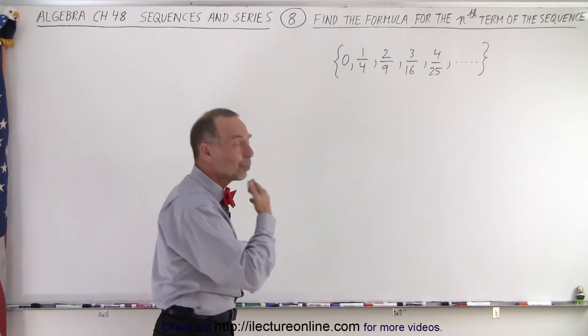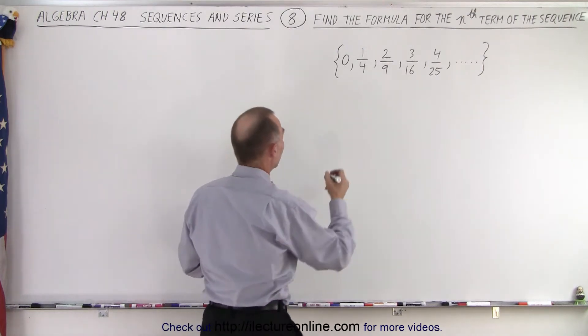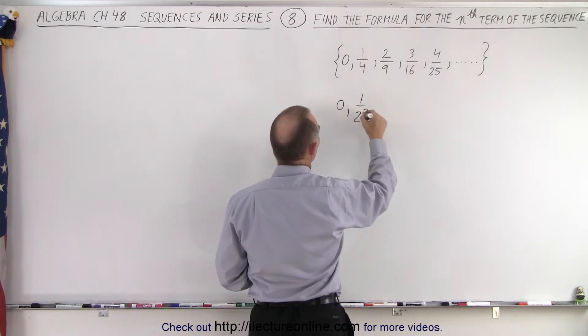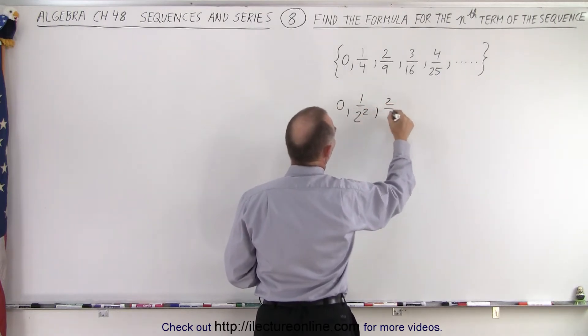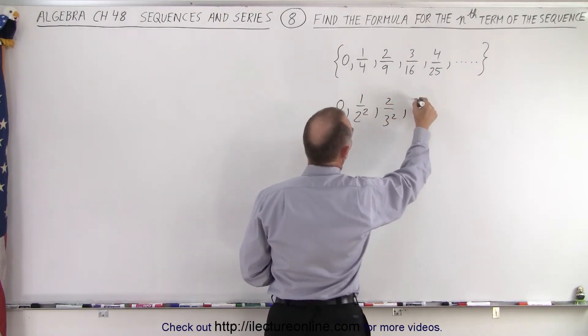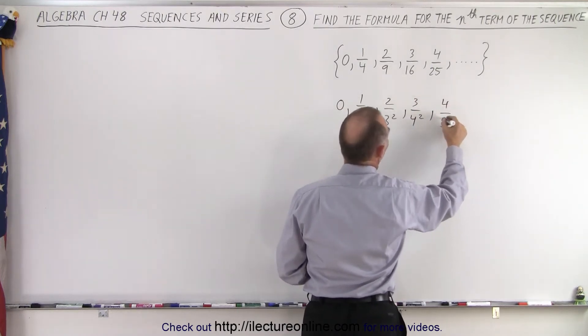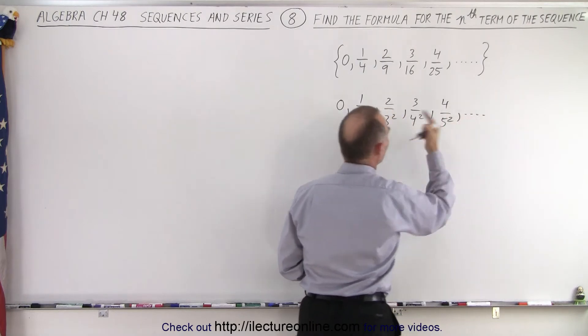So let's rewrite the sequence a little bit. So here what we're going to do is write as 0, 1 over 2 squared, 2 over 3 squared, 3 over 4 squared, 4 over 5 squared, and you can see the pattern.